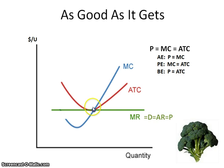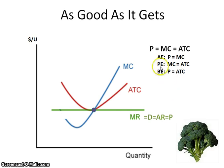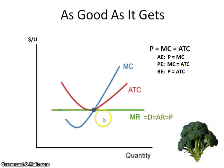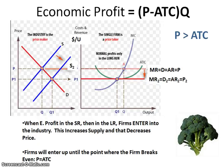We've got this one dot representing where each of these different efficiencies are happening. The first is allocative efficiency — producing the right mix of goods — and the formula for that is price equals marginal cost. You also have productive efficiency, where marginal cost equals average total cost. And lastly, the firm in the long run breaks even, where price equals ATC. All three of these are achieved in the long run.